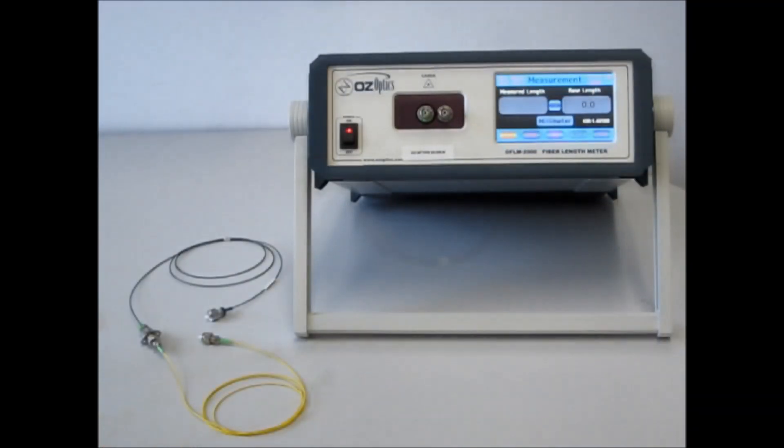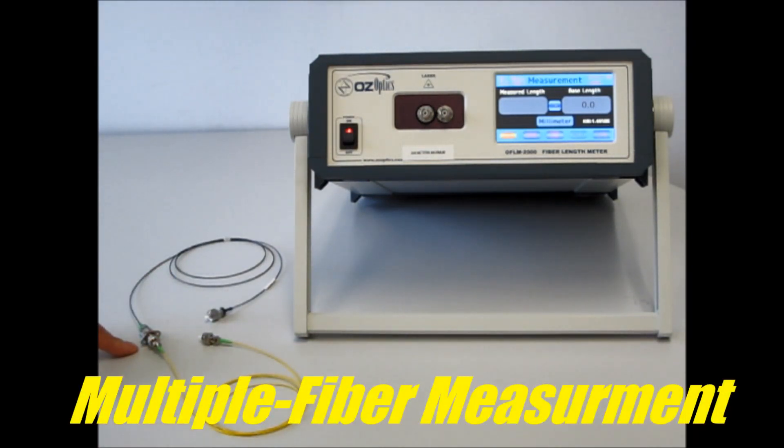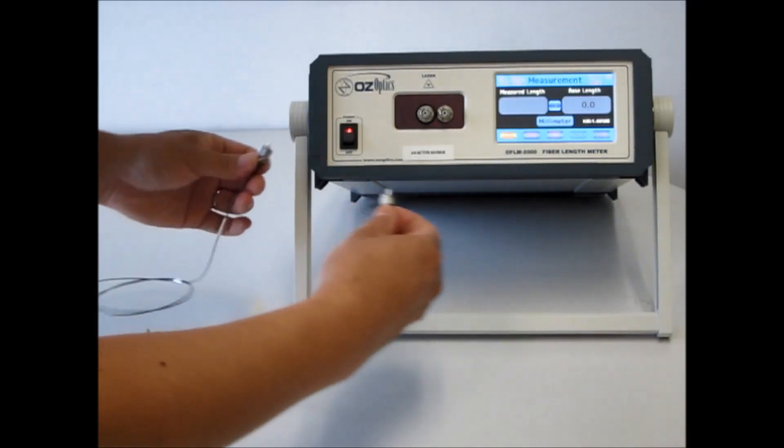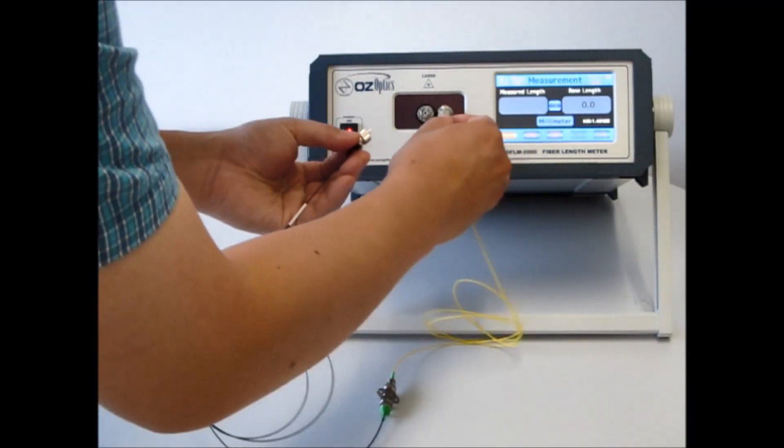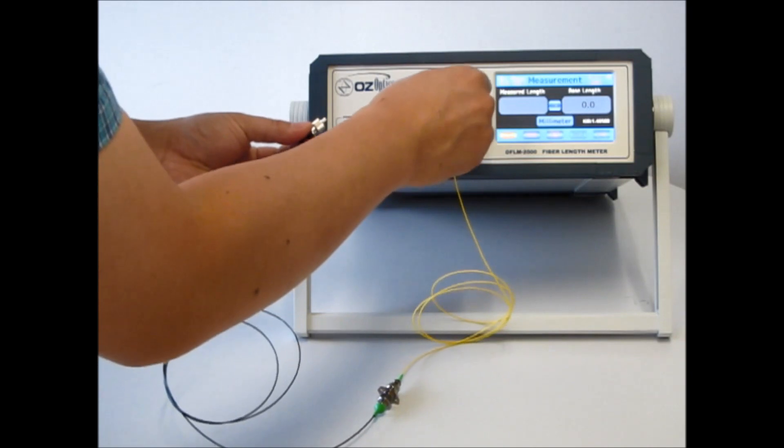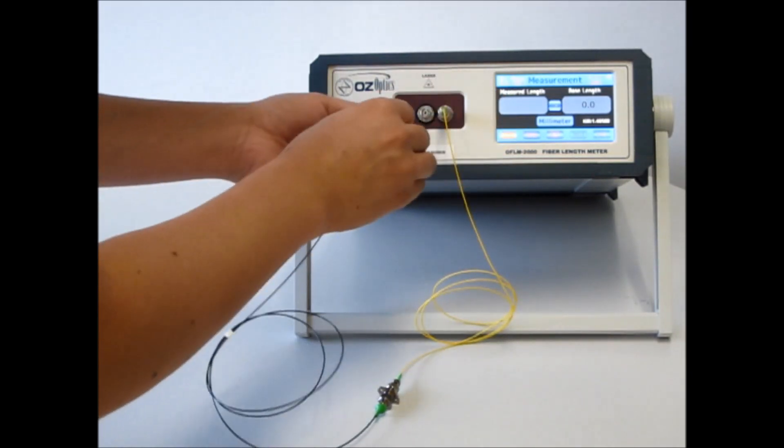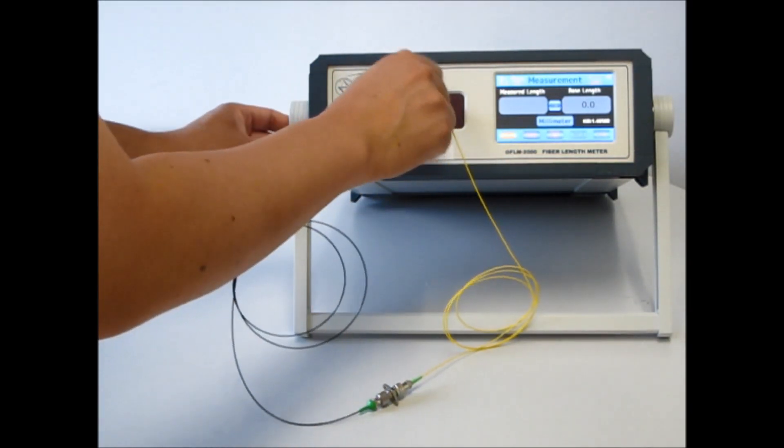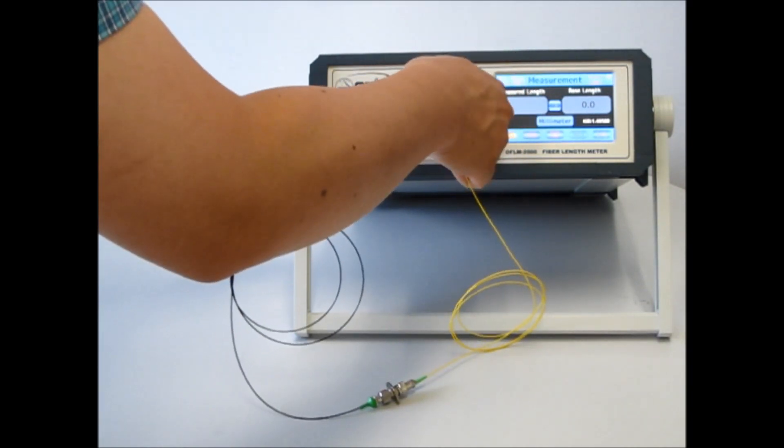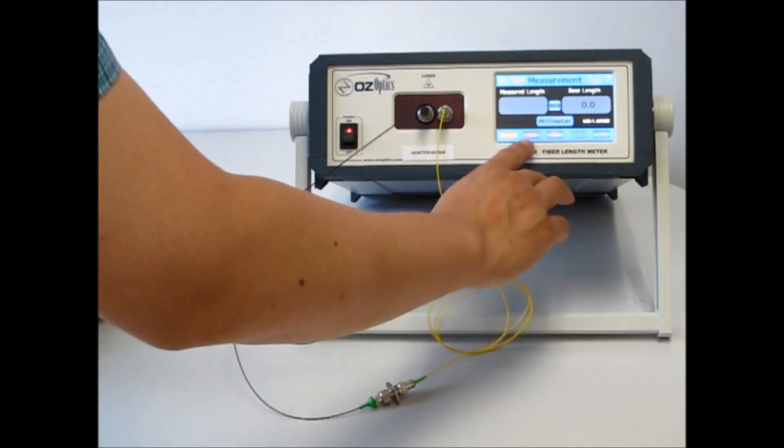The fiber length meter is a very robust measurement system. Here again, I have the two different patch cords from earlier, and I've connected them together using a sleeve-through adapter. Let's plug this in. Again, one end on the receive port and one end on the send port. Let's tighten up the connections and push the run button.